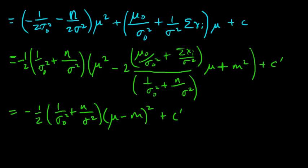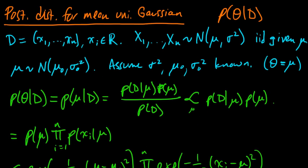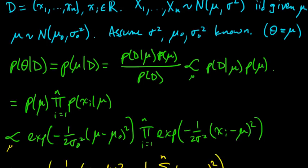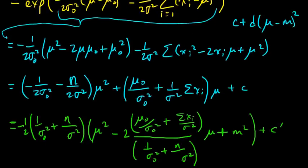We're back and we're computing the posterior distribution for the mean of a univariate Gaussian. Let's go back and remind ourselves quickly what we're doing. We're getting the posterior distribution — the distribution on mu given our data. We wrote that this was proportional to some stuff, pulled together the exponents, and then we were looking at the exponents and did a lot of little calculations.